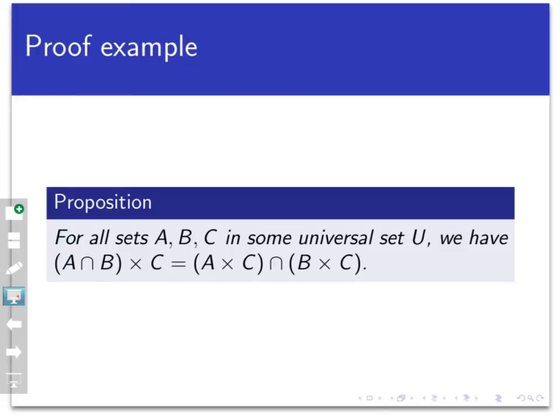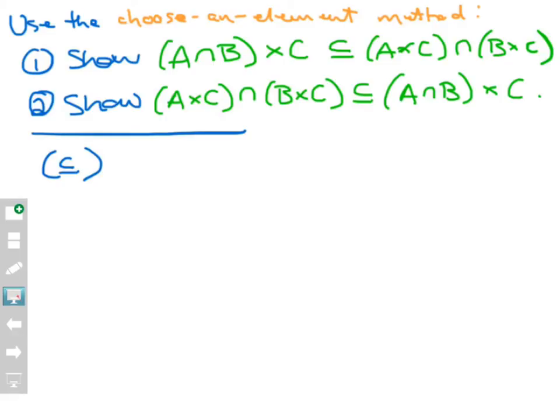To set this up, we would like to use Algebra of Sets if possible, but in this case that's not really easy to do because we don't have a lot of pre-existing set identities for Cartesian products. So we're going to use the choose-an-element method — the old-fashioned way — by showing, first of all, that A intersect B cross C is contained as a subset of A cross C intersect B cross C, and then showing the converse. We just need to keep track of the definitions of subset, Cartesian product, and intersection.